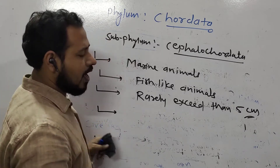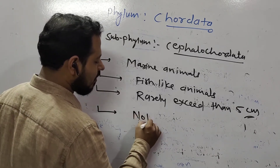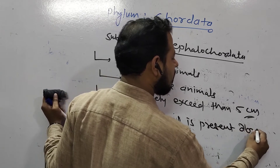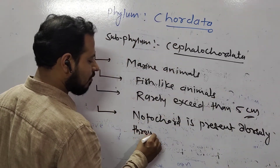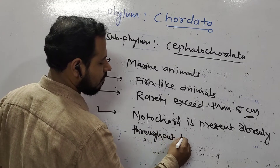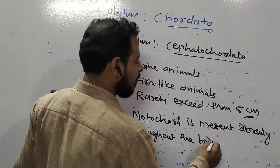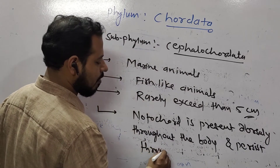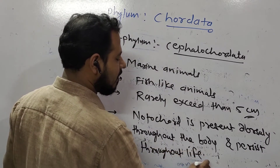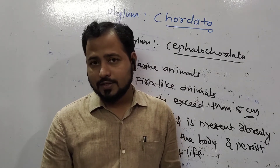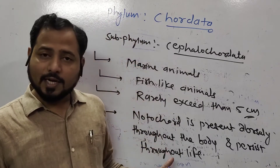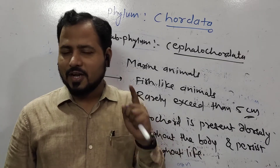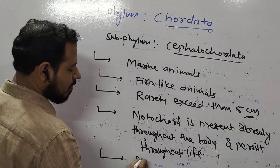The best example of Cephalochordata is Amphioxus. Their notochord is present dorsally throughout the body and persists throughout their entire life — it never degenerates. The rod-like notochord runs from top to bottom on the dorsal side and never degenerates.